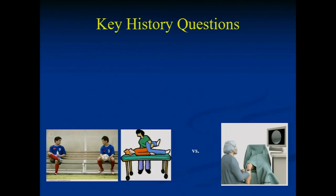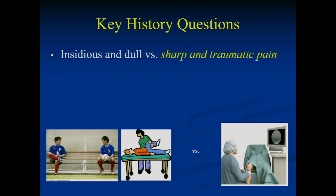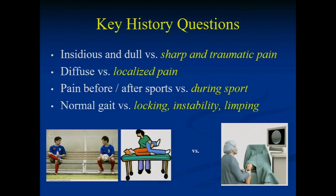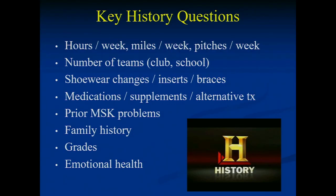Because kids have difficulty voicing what's going on and parents often answer for them, there are key history questions I like to ask to differentiate overuse from trauma. Insidious, dull pain is less concerning; sharp, traumatic pain warrants further workup. Diffuse pain is less worrying than a child who can point to one specific area. Pain before and after sports suggests overuse; pain during sports is more concerning. If they walk in normally I'm less worried, but locking, instability, or limping makes me want to work it up further.